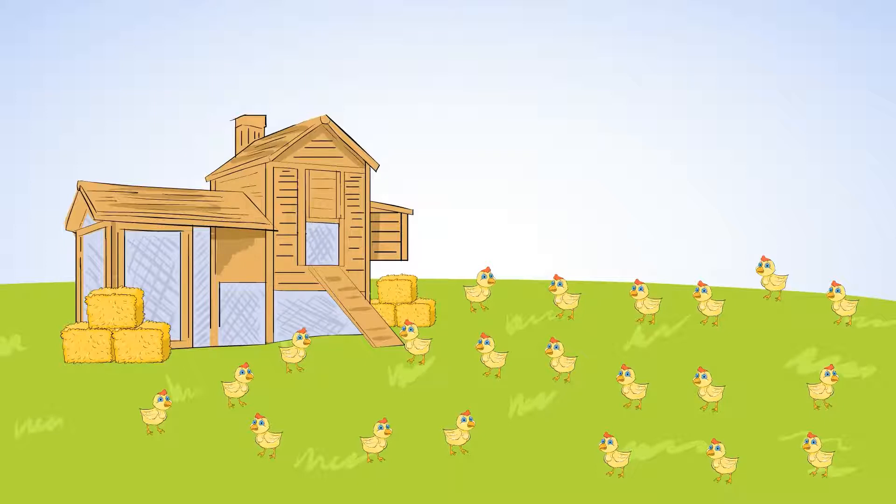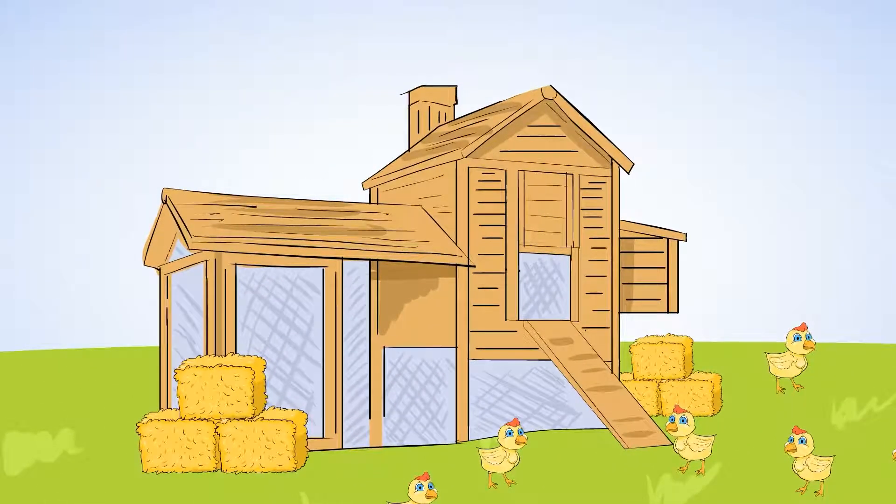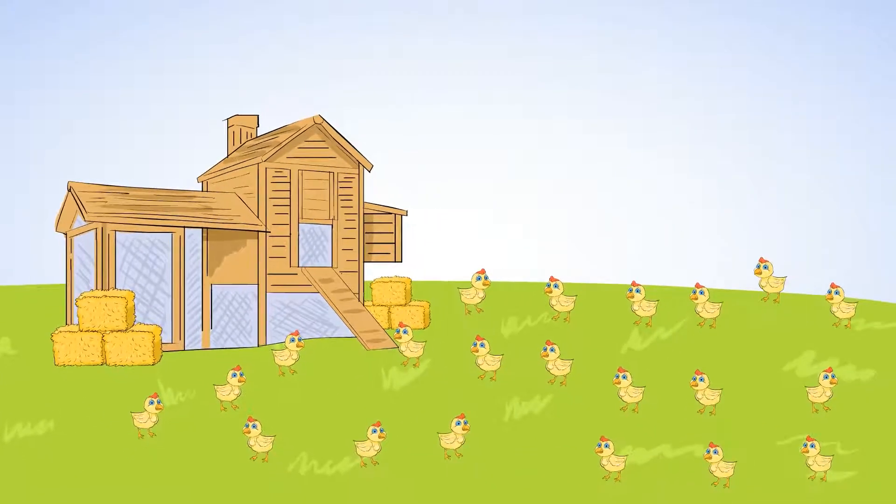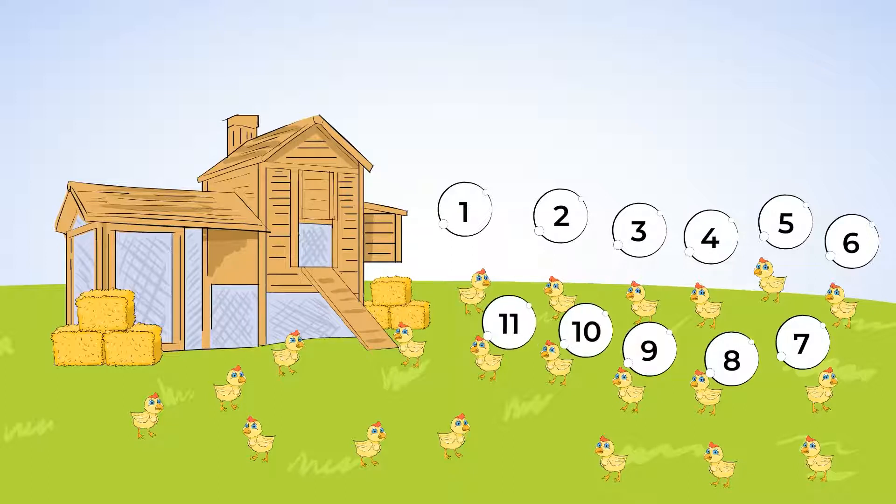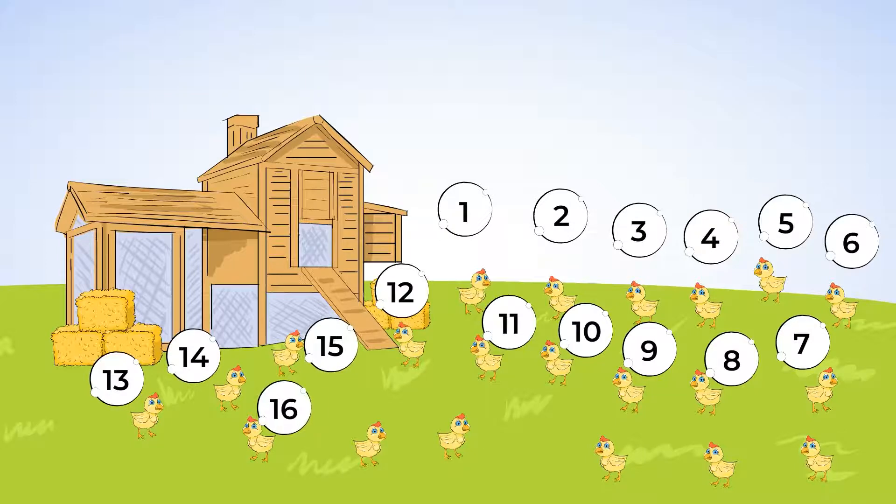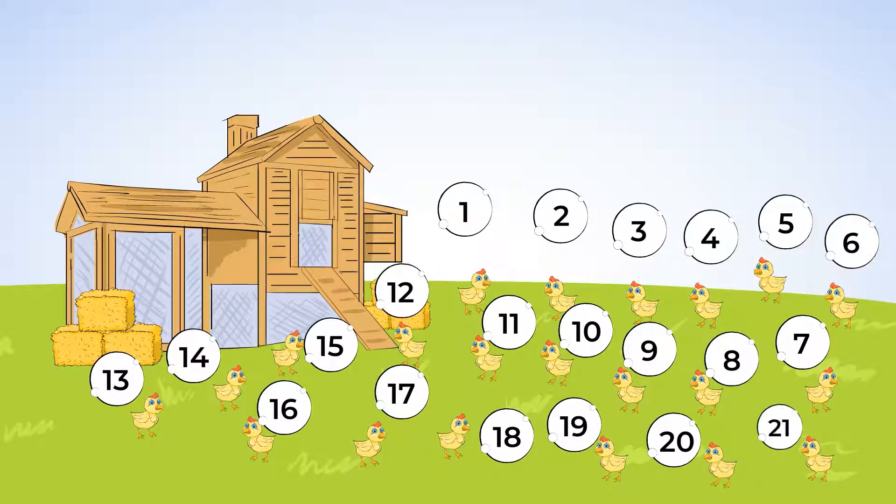Look at all these baby chicks. They're so tiny and cute and I bet there are some hiding in the chicken coop too. We'd better be extra careful when counting them. First, let's count the chicks we can see. 1, 2, 3, 4, 5, 6, 7, 8, 9, 10, 11, 12, 13, 14, 15, 16, 17, 18, 19, 20, 21. Woo, 21 chicks.